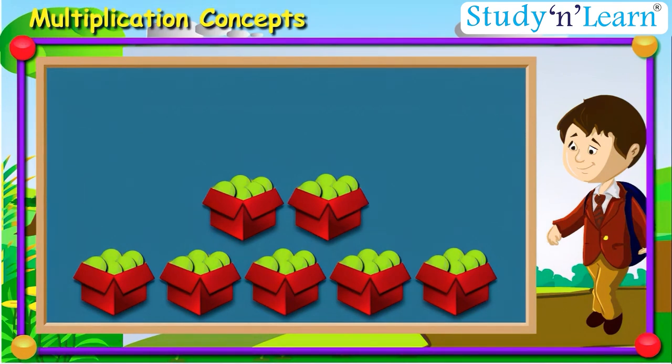Children, this question is similar to the one where we have 7 groups, each having 5 balls. So the total number of balls will be 7 multiplied by 5, which comes out to be 35.